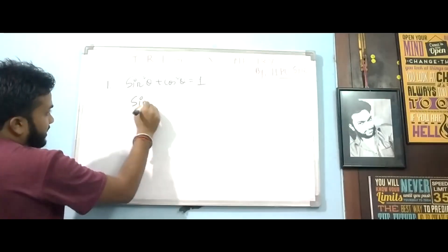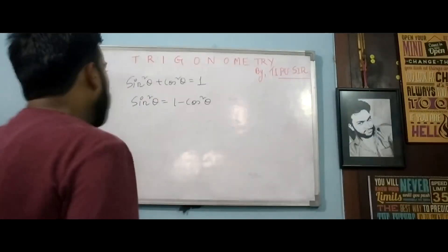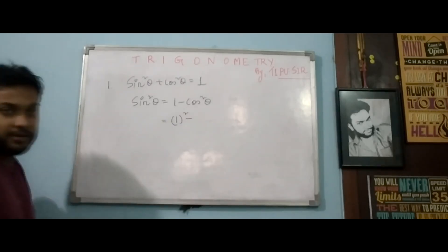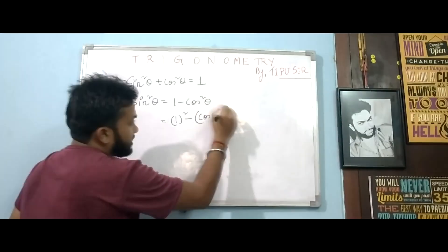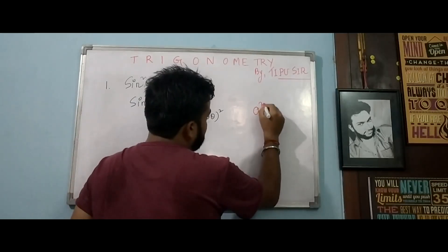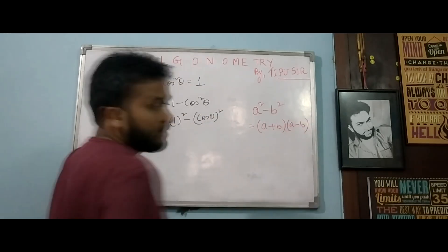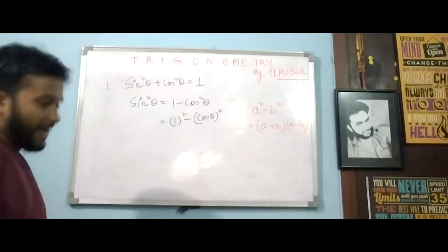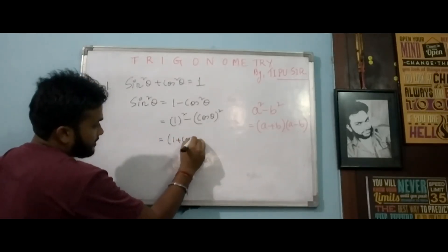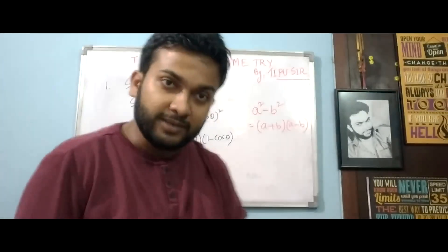We can see that sin square theta equals to 1 minus cos square theta. With a little observation, this can be written as 1 squared minus cos theta whole square. Can you remember a square minus b square, which we write as (a+b)(a-b)?